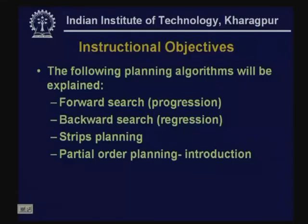In the last class we had a first introduction to planning systems. Today's class is the second lecture on planning. The instructional objectives are: we will look in more detail at forward search as used for planning problems, then backward search or regression, then the planning algorithms used in the STRIPS system, and finally we will start with partial order planning and explain the basic partial order planning algorithm.